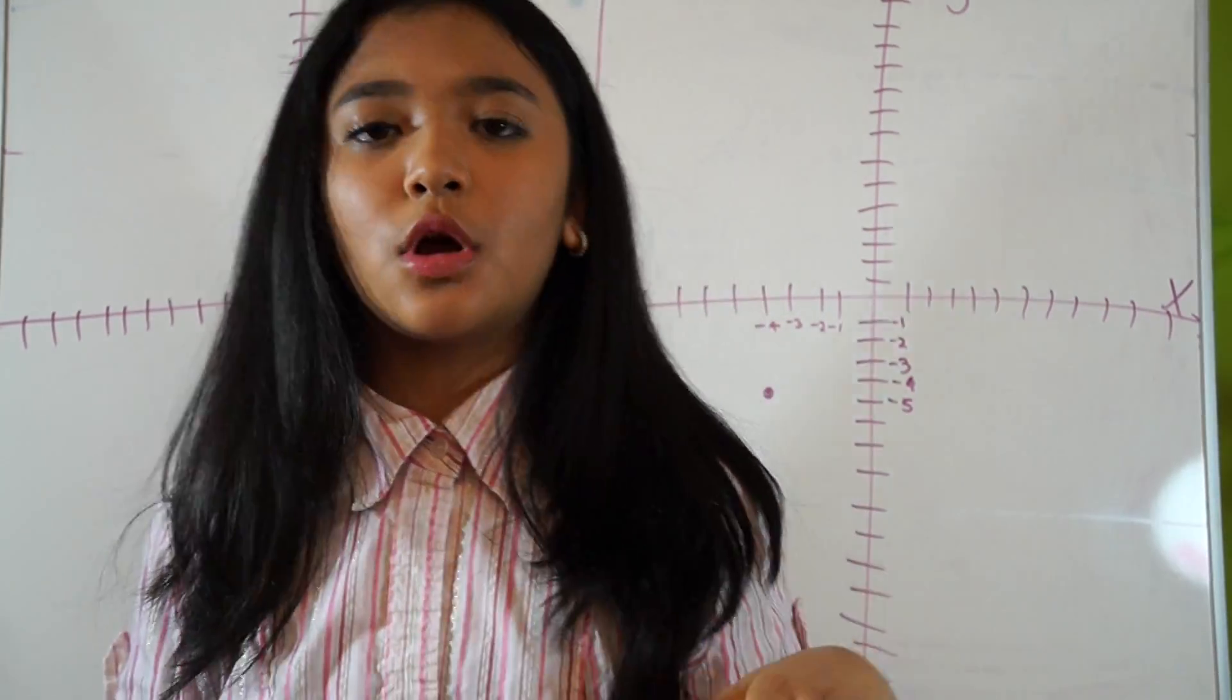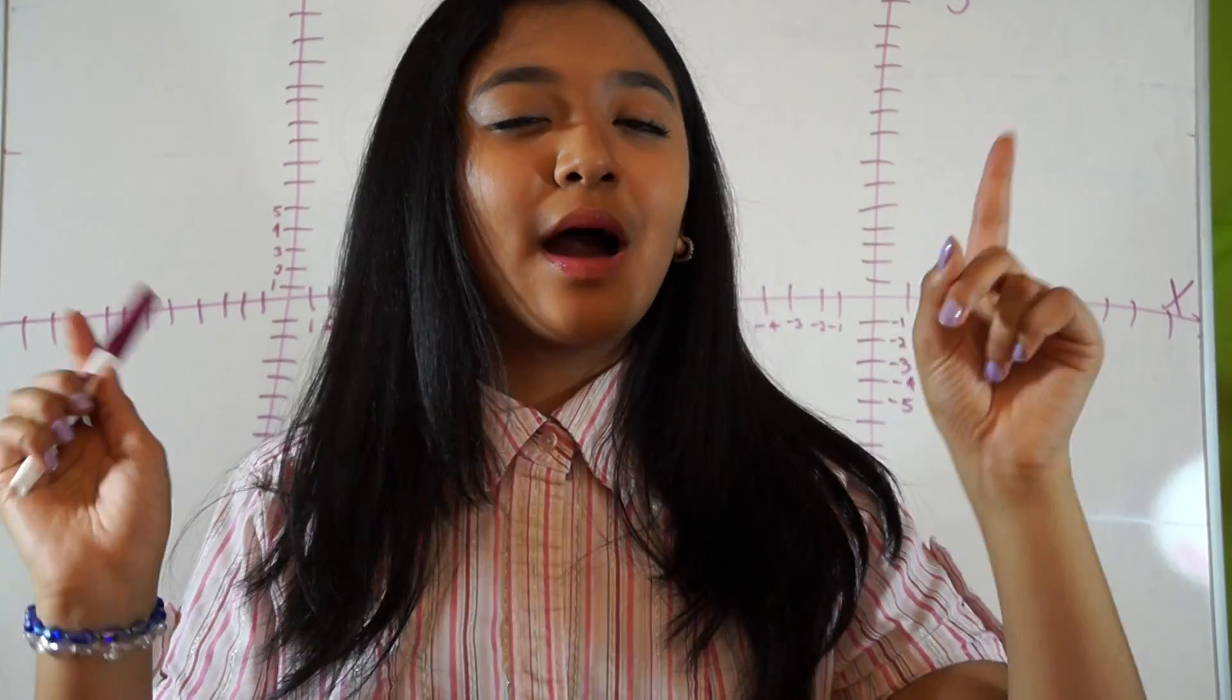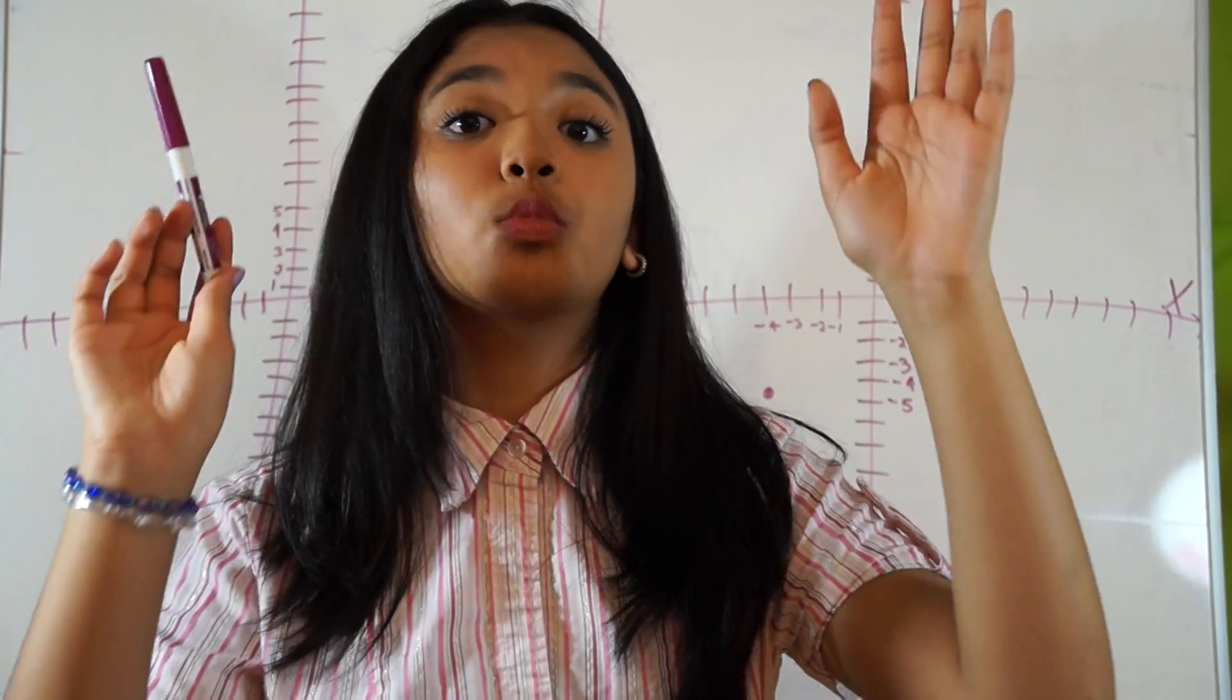What a Cartesian graph is, is basically X and Y planes. It's based on X and Ys, no theta, no R cosine thetas, that is calculus two. We're gonna focus on algebra today. To make it simple, I'm gonna say X and Y graph so that way you don't get confused with Cartesian. We're just gonna focus on X and Y graphs today.